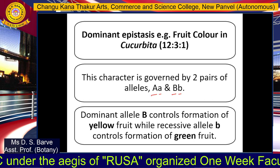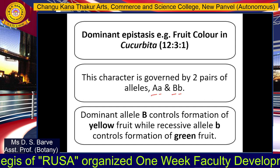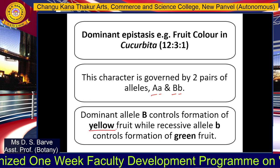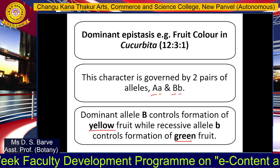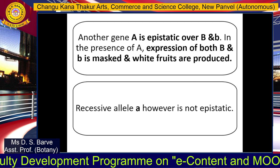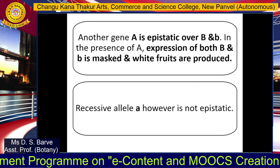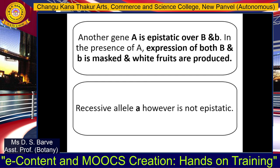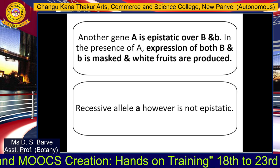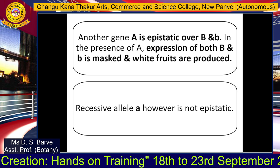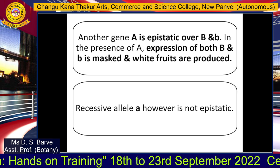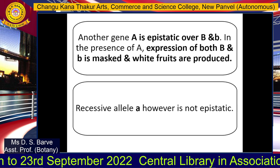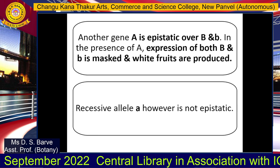The dominant allele B controls the formation of yellow fruit, and the recessive allele b controls the formation of green fruit. The other gene A, present at a distinct locus, is epistatic over both alleles capital B and small b. This means that in the presence of the dominant allele A, the expression of both capital B and small b is inhibited or masked, and so neither yellow nor green color can be produced — instead, white colored fruits are obtained.